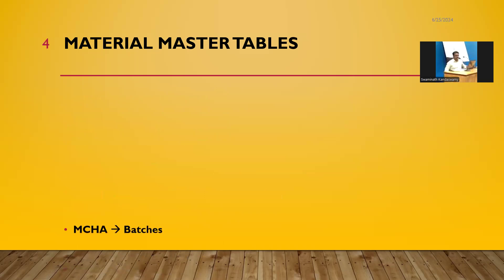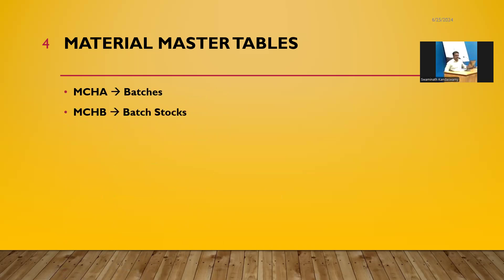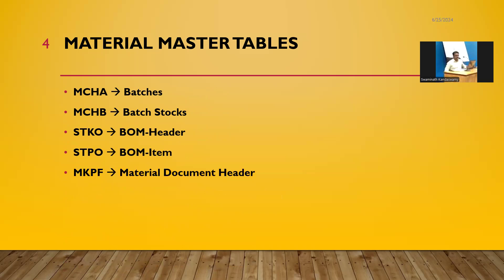MLGN: Material Data for Each Warehouse. MLGD: Material Data for Each Storage Type. MBEW: Material Valuation. MCHA: Batches. MCHB: Batch Stocks. STKO: Bill of Materials Header. STPO: BOM Item. MKPF: Material Document Header. MSEG: Document Segment for Material.